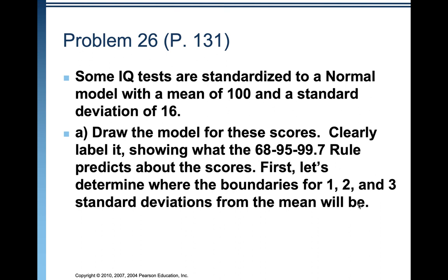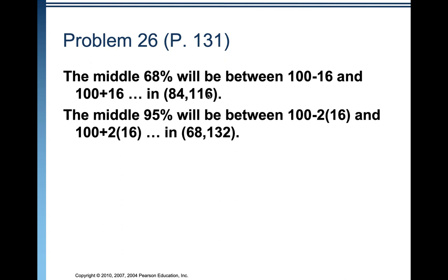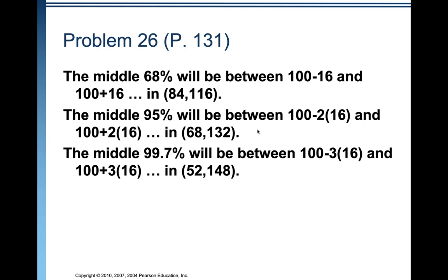We need to figure out where the boundaries are one, two, and three standard deviations below and above the mean. The middle 68% will be between 100 minus 16, which is 84, and 100 plus 16, which is 116. The middle 95% will be between 100 minus 2 times 16, which is 68, and 100 plus 2 times 16, which is 132. And the middle 99.7% will be between 100 minus 3 times 16, which is 52, and 100 plus 3 times 16, which is 148.